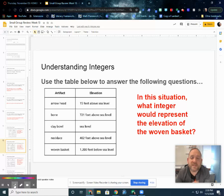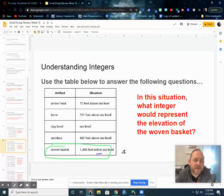So this one, in this situation, what integer would represent the elevation of the woven basket? So here's our woven basket. Again, we have 1,200 feet. But this 1,200 feet is below sea level. So we'd have our 1,200. That doesn't change. 1,200 feet below sea level. You'd have -1,200. Hopefully that makes sense for you.